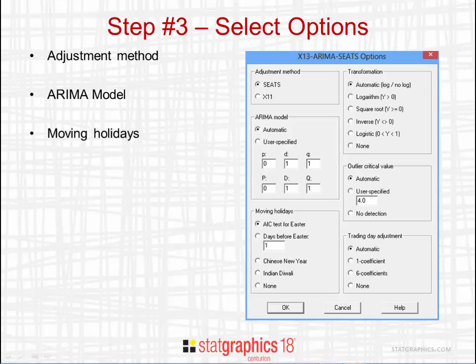You can also specify which moving holidays you'd like the program to adjust for. You can choose between Easter, Chinese New Year, Indian Diwali, or none. In the case of Easter, you can either specify how many days before Easter you wish to account for, or let the program try different numbers of days and automatically determine the best adjustment.